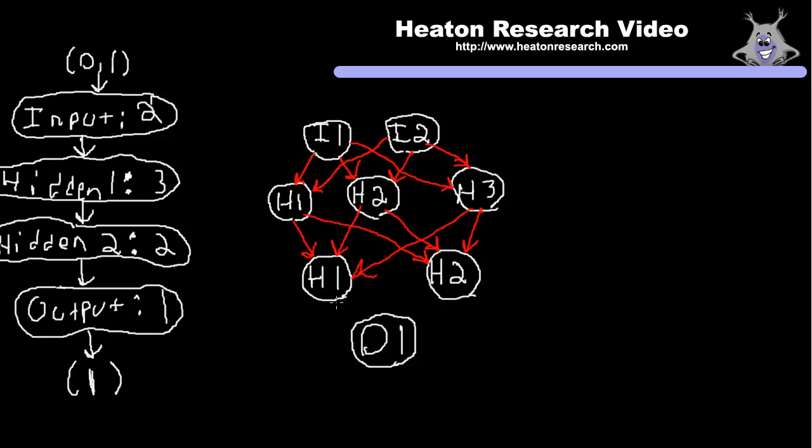These are the connections. These are the actual weights that the neural network has that determine what it's going to output. So you can see every neuron in one layer is connected to the next layer, and so on and so forth. Nothing skips a layer and nothing flows back to a previous layer.